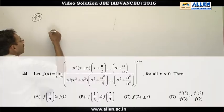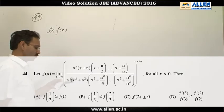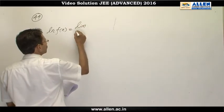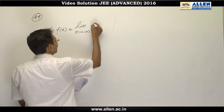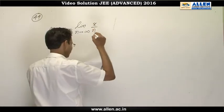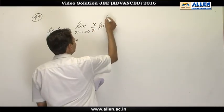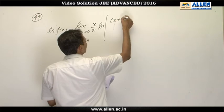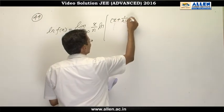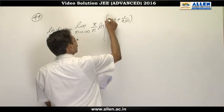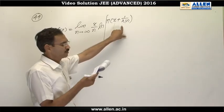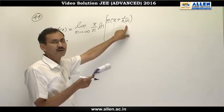Question number 44. This is a nice problem. We will take log, ln of x is equal to limit n approaching to infinity x by n ln of this product: x plus n, x plus n by 2, x plus n by 3 and so on.